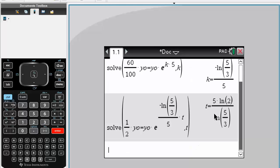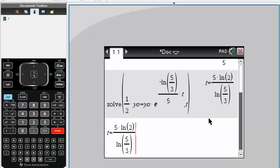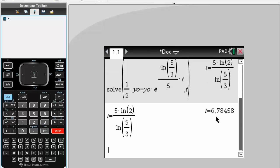And this is the amount of time it would take for the sample to decay to half the amount. But since we're using a calculator, we can get an approximation. So we will do a control enter. This would give us an approximation, and this is the number of days for the sample to decay to half the original amount. And that's it.